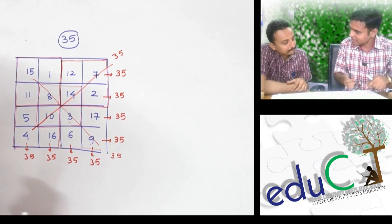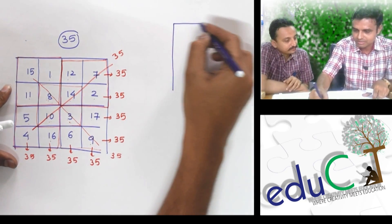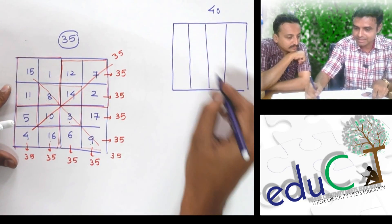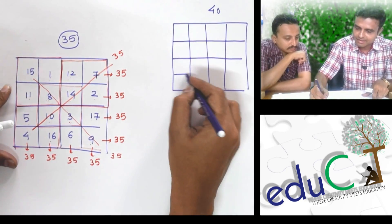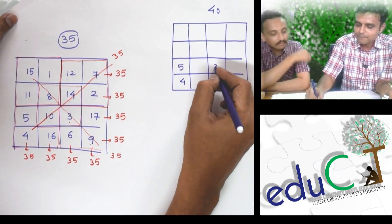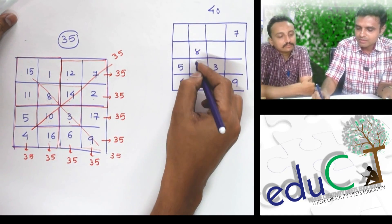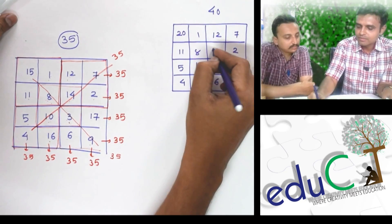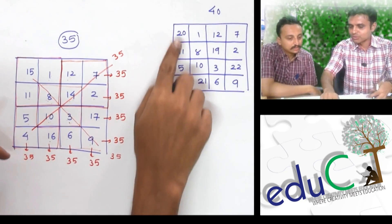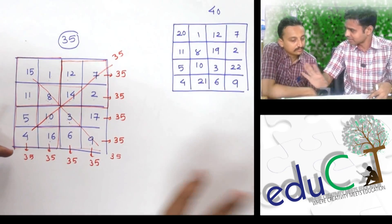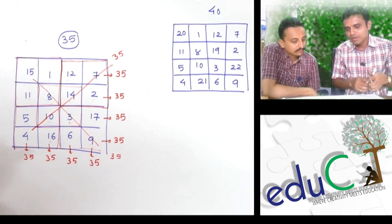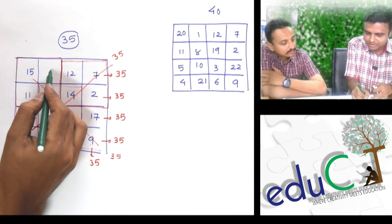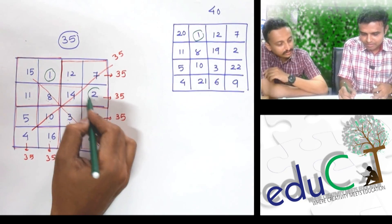So let's make a magic square of 40. By making a magic square of 20, 21, 21, 21, 23, 23, 24, 24. Okay. So you can try it.